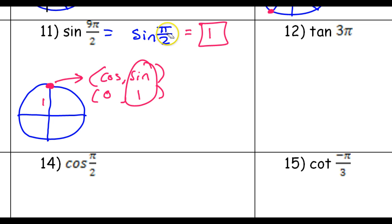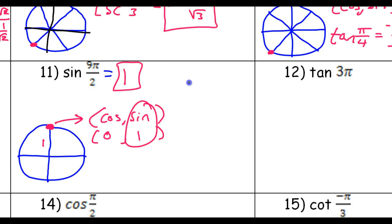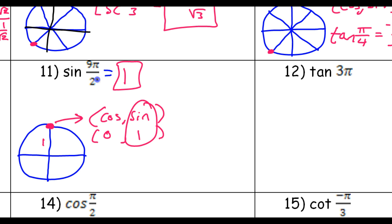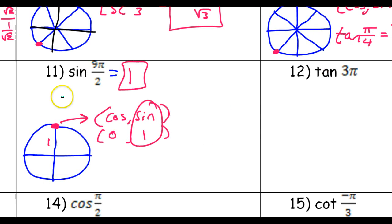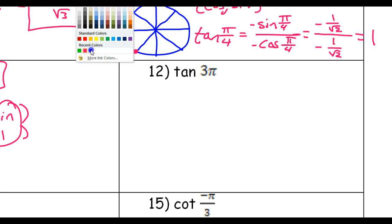We didn't actually use the reference angle in that problem — we just directly did nine pi over two, saw where it was, and wrote down the answer. For pi over two you just do it directly. Also, there is no reference angle for pi over two. Pi doesn't have a reference angle either, so let's just do it directly.